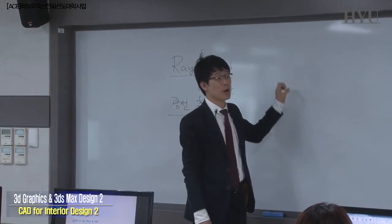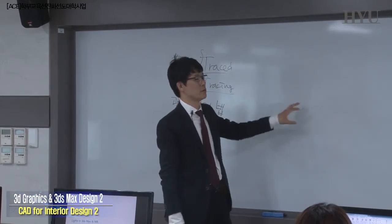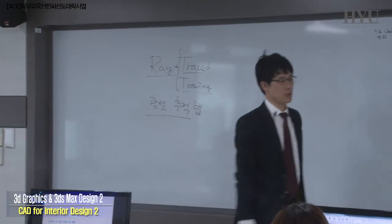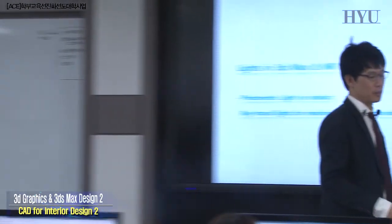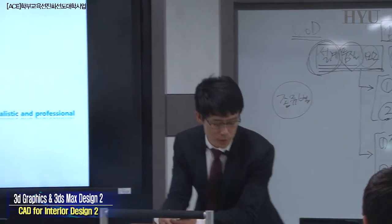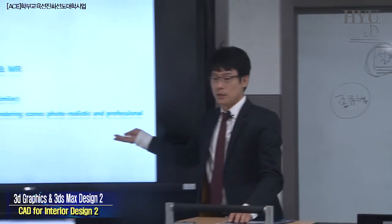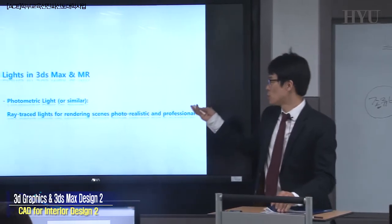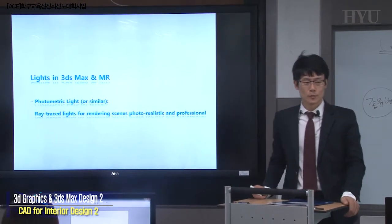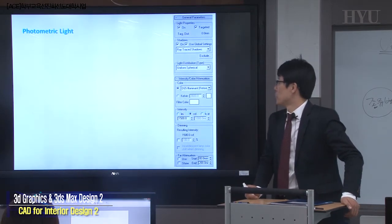Even if we partially calculate them, according to that kind of ray-traced approach, as a result we can get some photorealistic rendering. That's how the mechanism works. That is why I mentioned the photometric light — because basically it supports ray-tracing. That is why we have to use that kind of advanced lighting system.